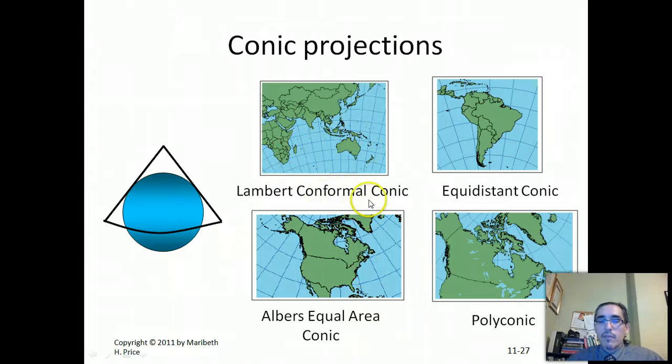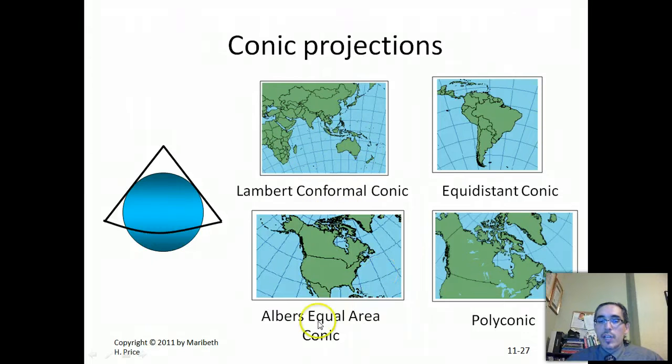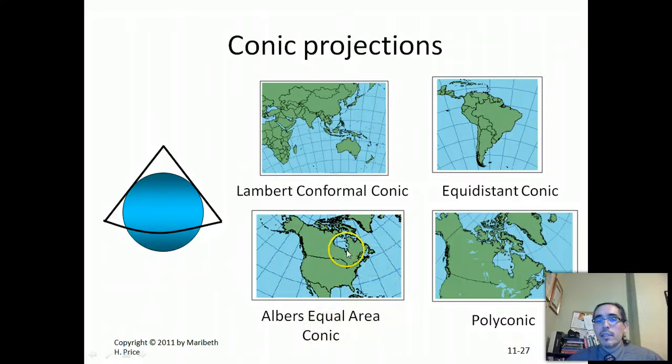So in the upper one, you get this conformal conic, which preserves shape. And the lower one, you see equal area, referencing the fact that it's preserving the relative sizes of the area. So those are somewhat accurate.